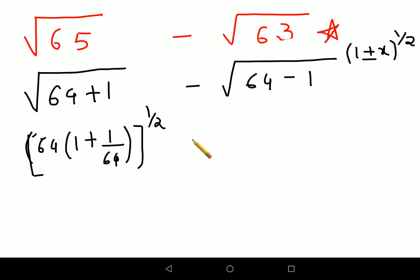Similarly here, I will have 64(1 minus 1/64) raised to 1/2. Why did I do that? Because this can be equal to 1 plus minus x upon 2. This x gets multiplied by 1/2.